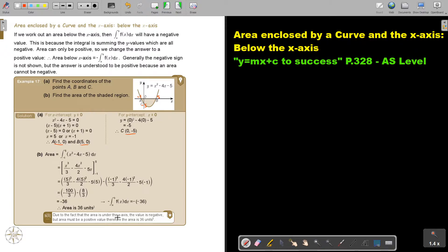It's just we say therefore the area is 36 units squared. Due to the fact that the area is under the x-axis, the value is negative. But area must be a positive value. Therefore, the area is 36 units squared.